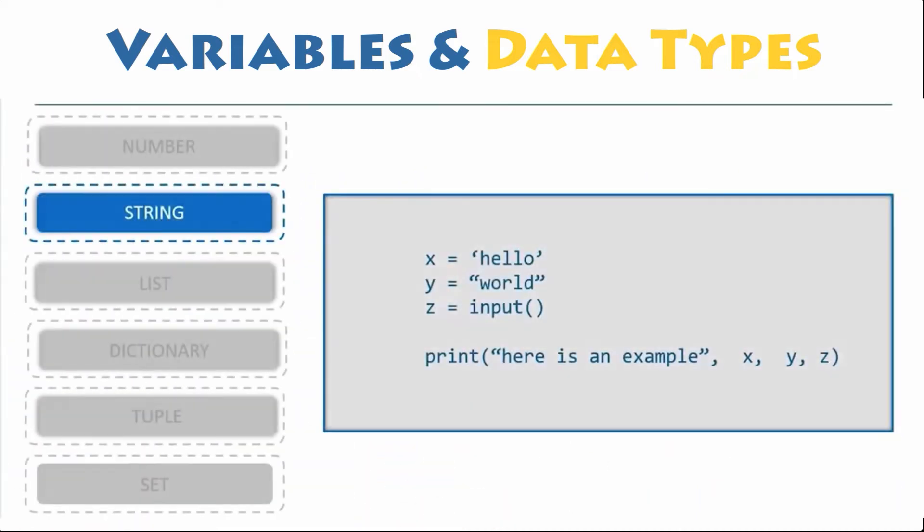Strings. The string type in Python is represented by the str class. Strings are immutable, which means that their content cannot be altered after their creation.